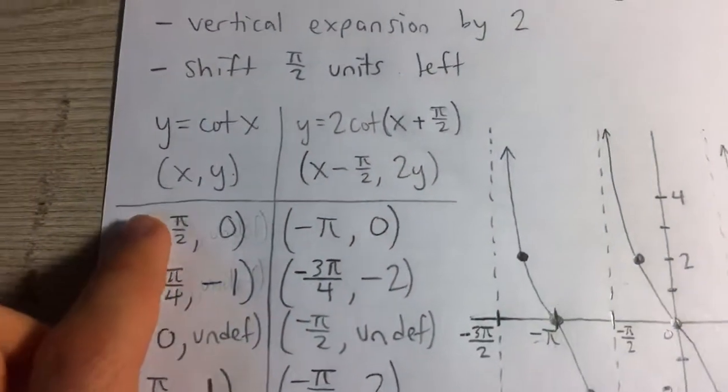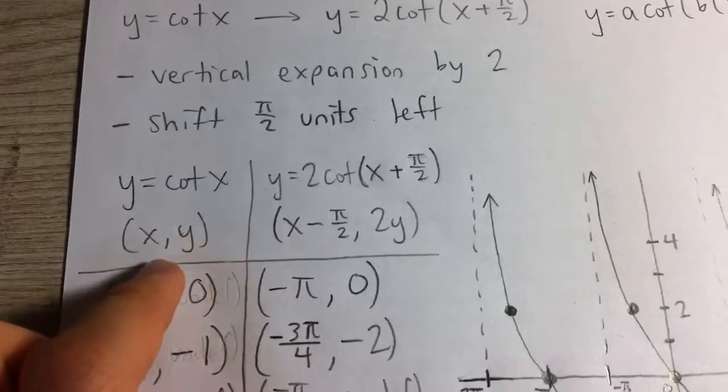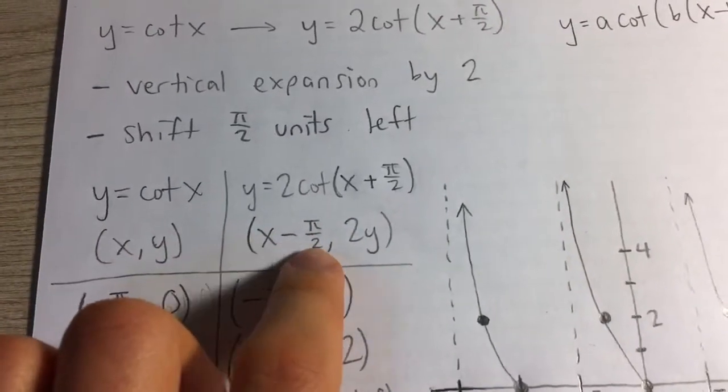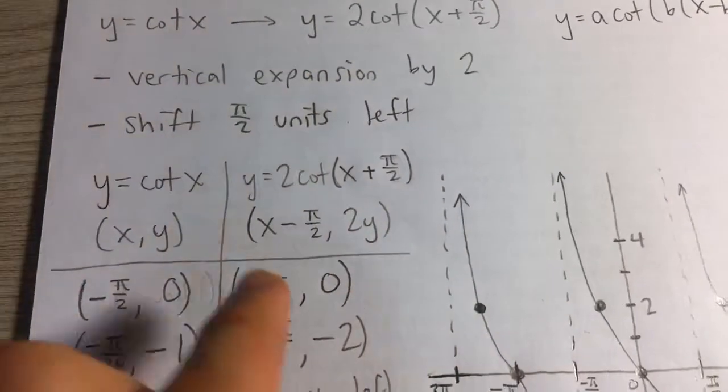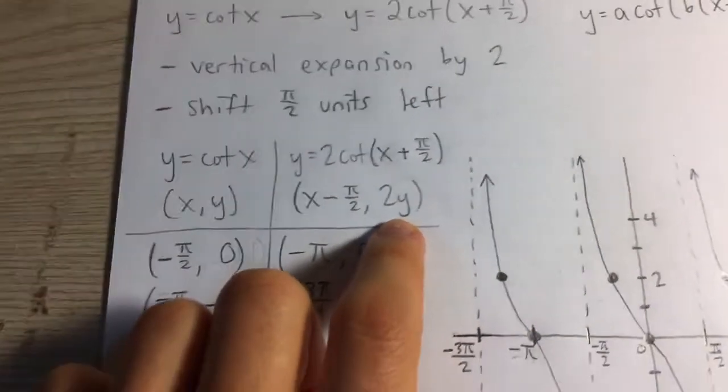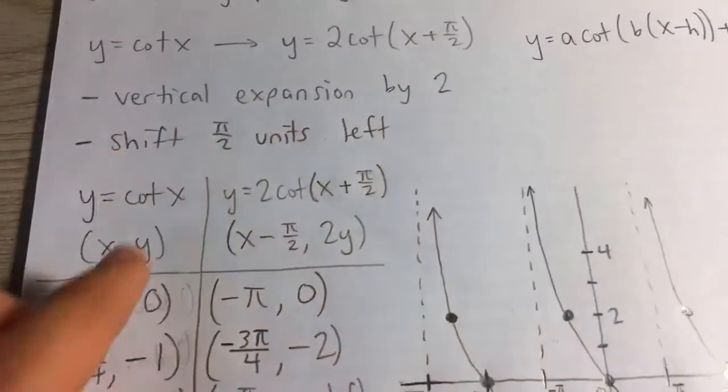pi over 2 units. And so what we can do is map all the points from the original function to the new function by subtracting pi over 2 from their x coordinate because we're moving it to the left and multiplying all the y coordinates by 2 because we're expanding vertically.